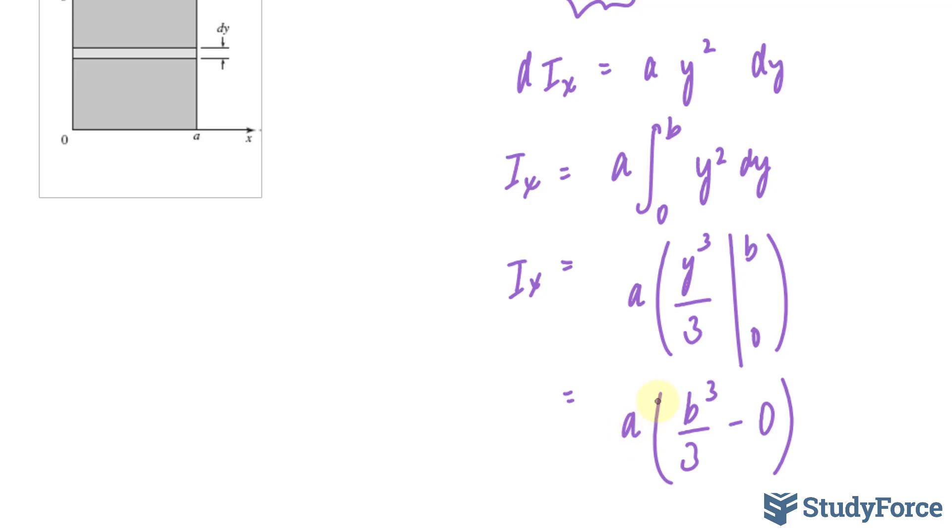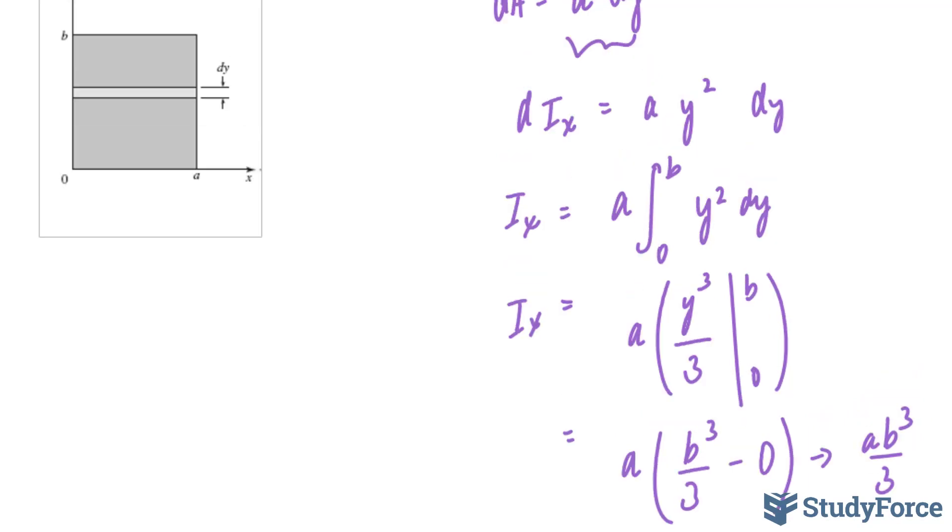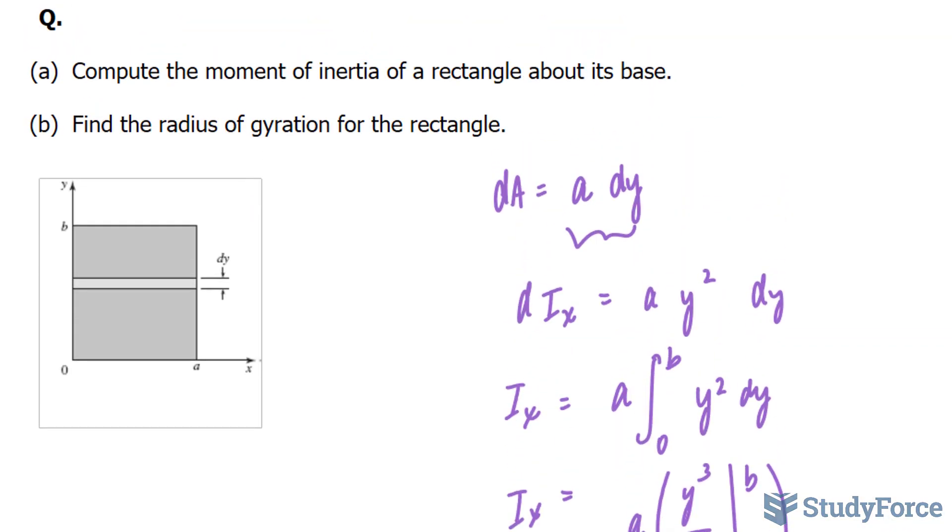And so the moment of inertia about the x axis is equal to ab to the power of 3 over 3. Let's move on to question b. In question b, they want us to find the radius of gyration for the rectangle.